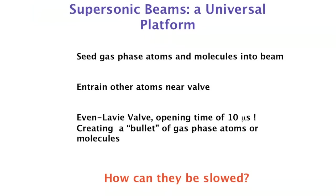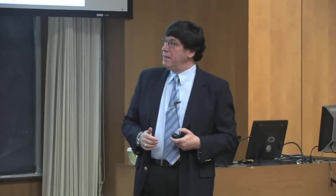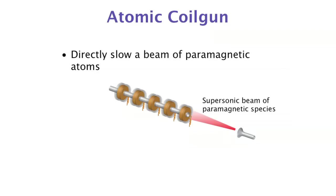What makes supersonic beams so useful is that they are a universal platform for ultra-cold atoms or molecules — you can get practically anything into the beam. With a pulsed valve you create a bullet of gas-phase atoms with a well-defined t=0. The atoms move down the tube at some controlled velocity. The question is: how can we stop or slow the bullet? We can't slam it into a wall, so we thought about using magnetic fields.